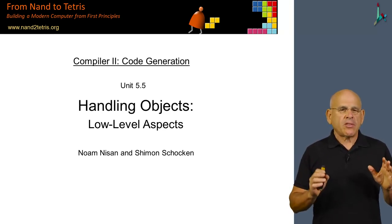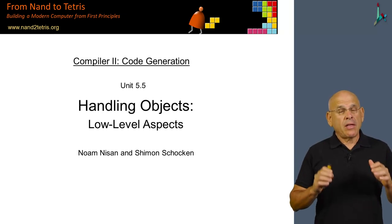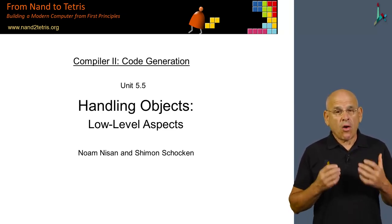We now begin a sequence of three units that discuss how the compiler generates code that is designed to handle objects.